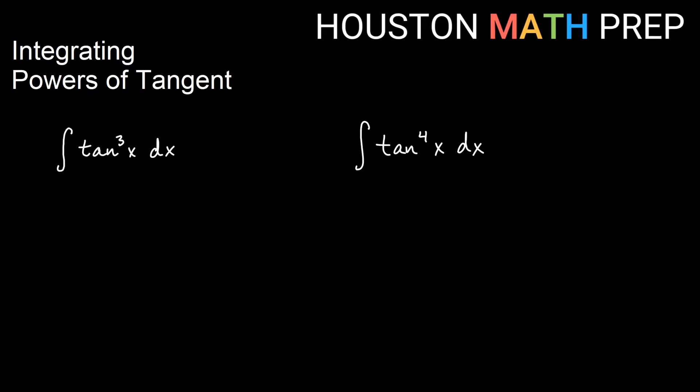Looking at tangent cubed x, you might think of changing this to tangent squared x times tangent x dx. I think that's pretty good intuition. If you look at this, you might notice we're not really going to be able to do a u substitution and find du here. So maybe we change the square like we did last time. We think of tangent squared as secant squared of x minus 1.